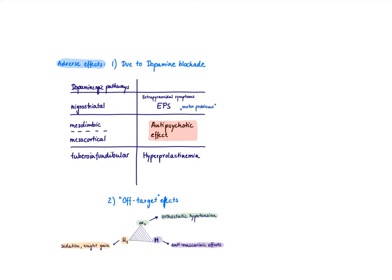First let's start with the mesolimbic mesocortical system. Dopaminergic signaling in patients with schizophrenia is increased. That's why we use this drug. So that's our antipsychotic effect.